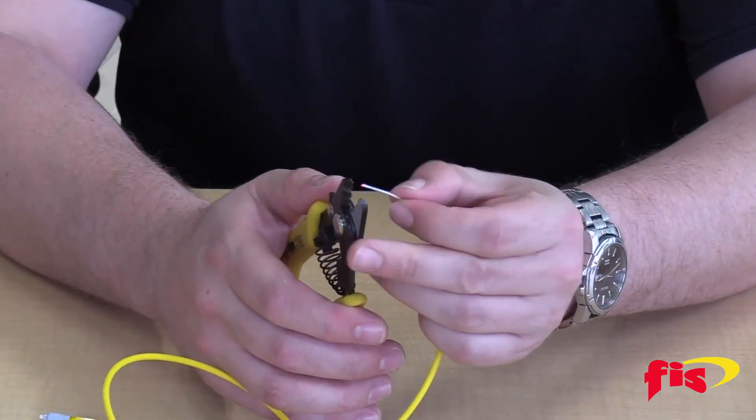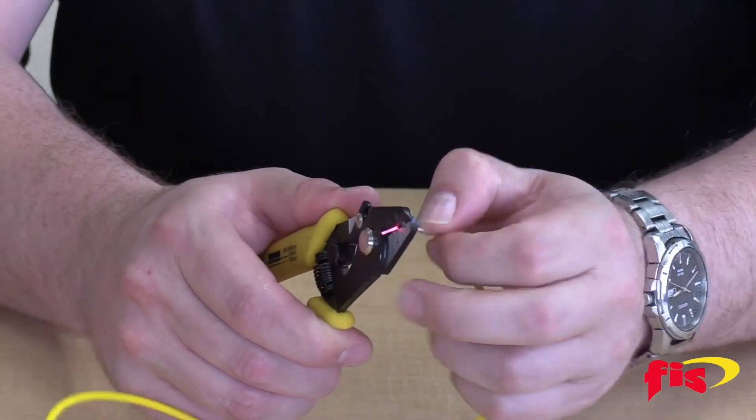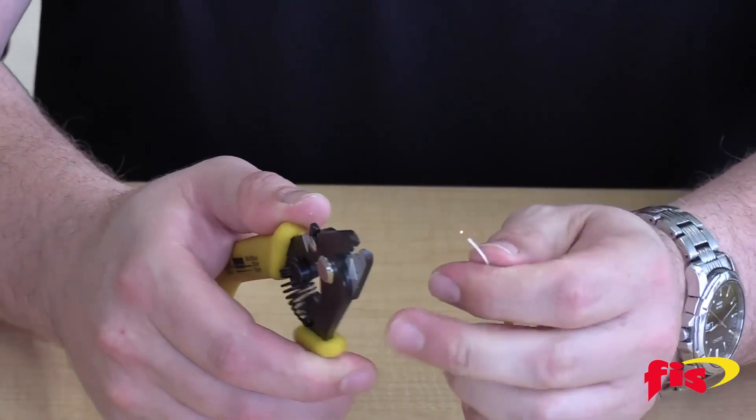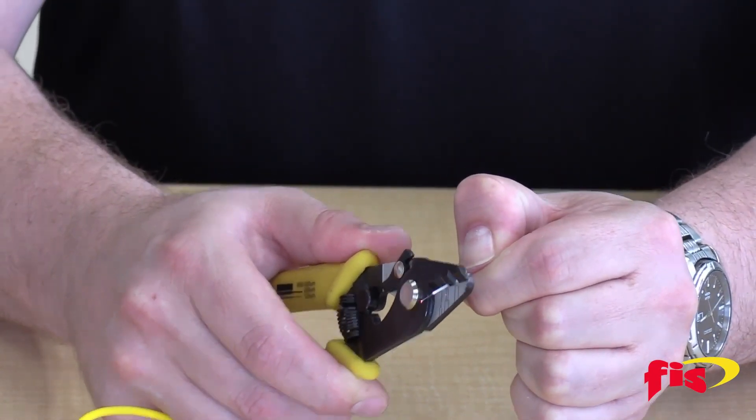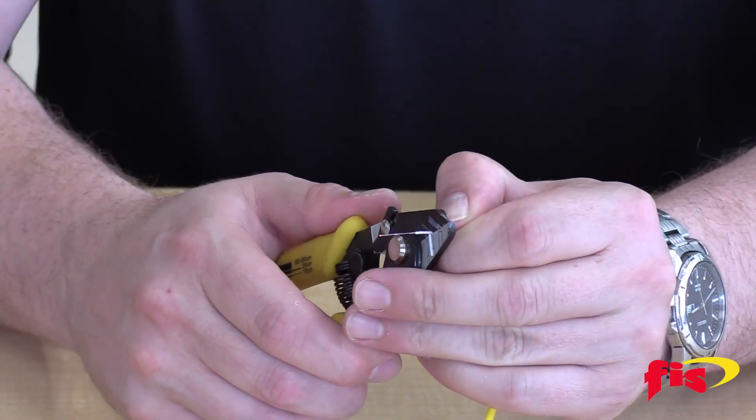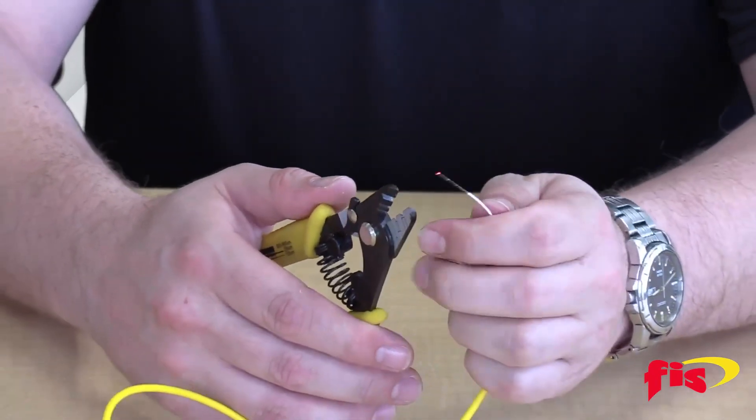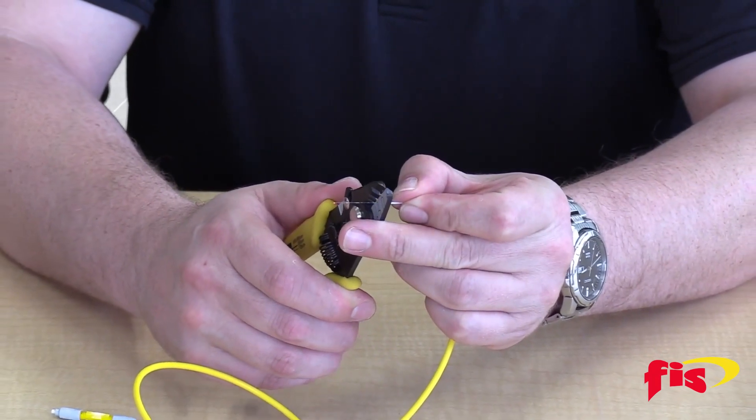The next step is to take the middle hole of the three-hole stripper and strip off the 900 micron type buffer from the fiber. Remember to strip this off in smaller pieces as it's much easier to remove.